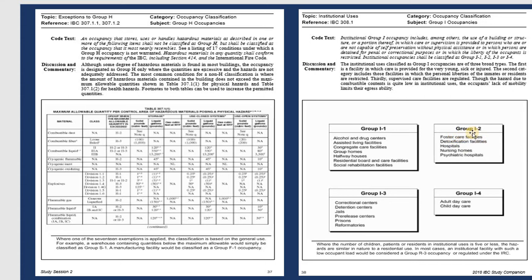Group I2 includes hospitals, nursing homes, psychiatric hospitals, and foster care facilities. This is a group where a lot of architecture design work happens — many people design for Group I2. Group I3 covers jails, prisons, and detention centers. In 30 years of working in architecture, I have only designed one jail — the T.O. Lacey Jail and Prison, located south of San Diego.